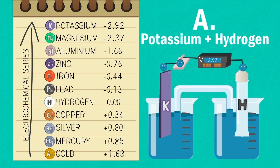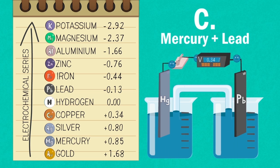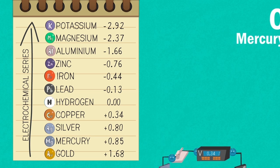For A, the answer is the electrons move from potassium to hydrogen. For B, the answer is the electrons move from zinc to copper. And for C, the answer is the electrons move from lead to mercury.